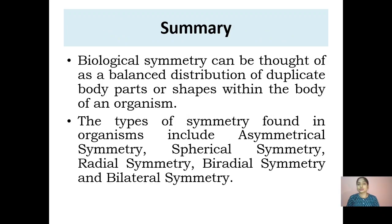To summarize: biological symmetry can be thought of as a balanced distribution of duplicate body parts or shapes within the body of an organism. The different types include asymmetrical, spherical, radial, biradial, and bilateral symmetry.